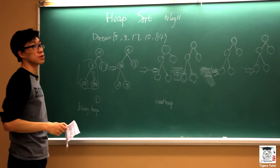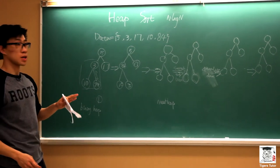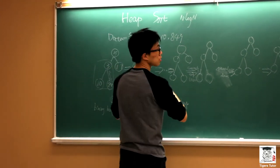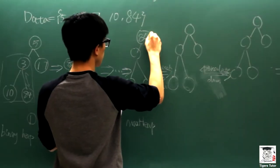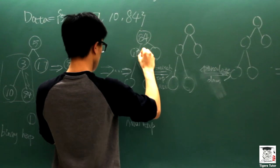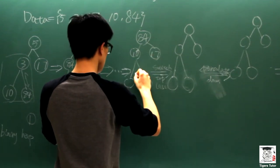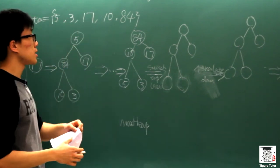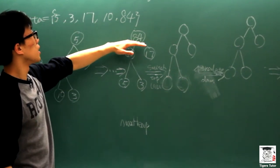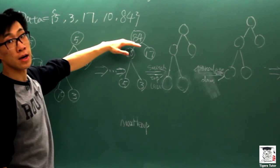After looking through all the elements, we can finally construct our max heap. I will just write down the result. As we can see, 84 is the largest element of the given array.